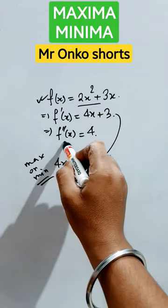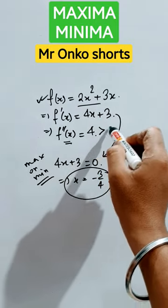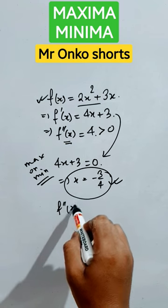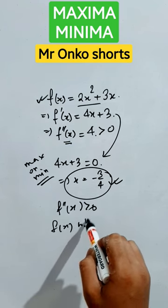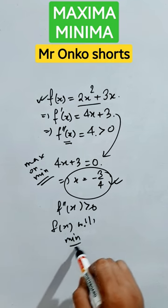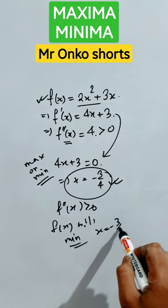Now let's see the second order. That is greater than 0. Since f double prime of x is greater than 0, f of x will have minimum value at x equals to minus 3 by 4.